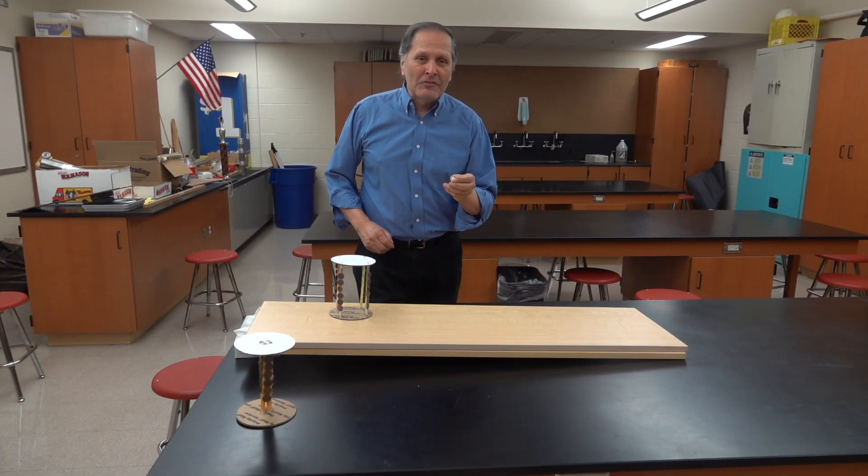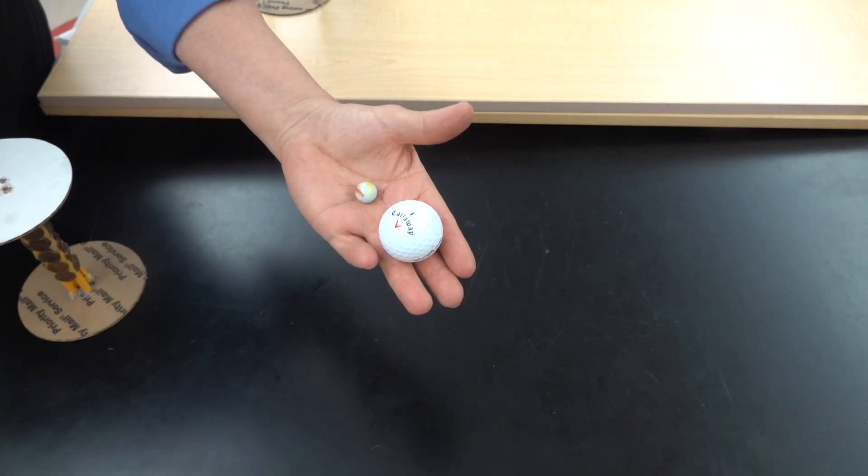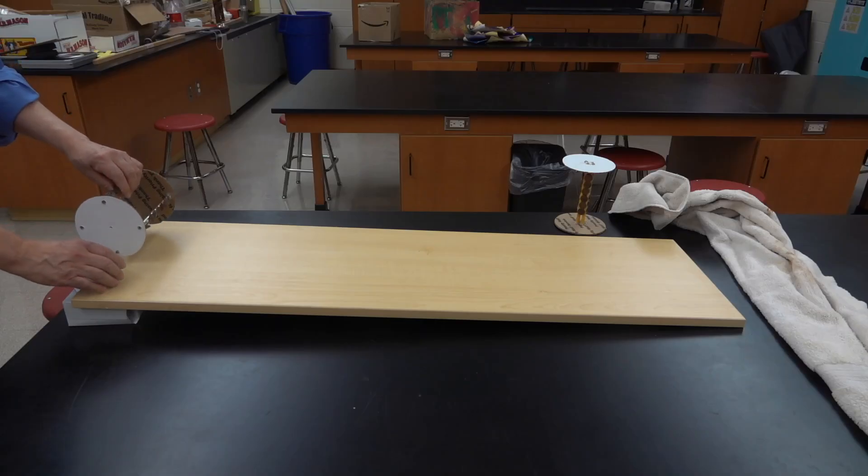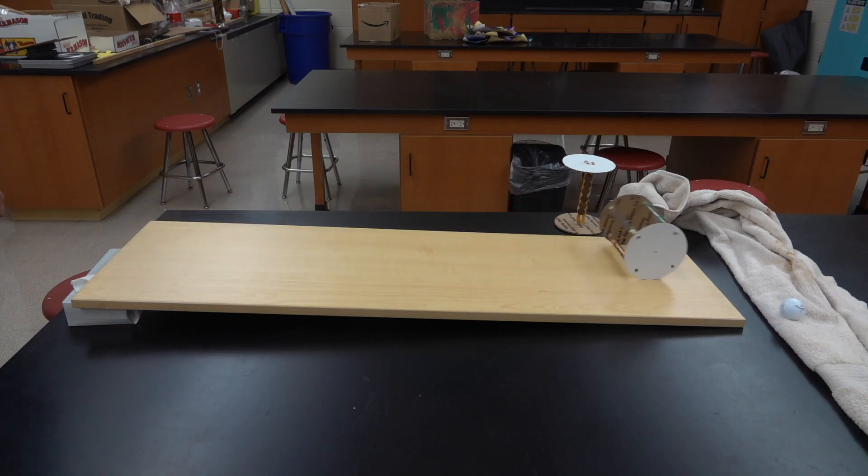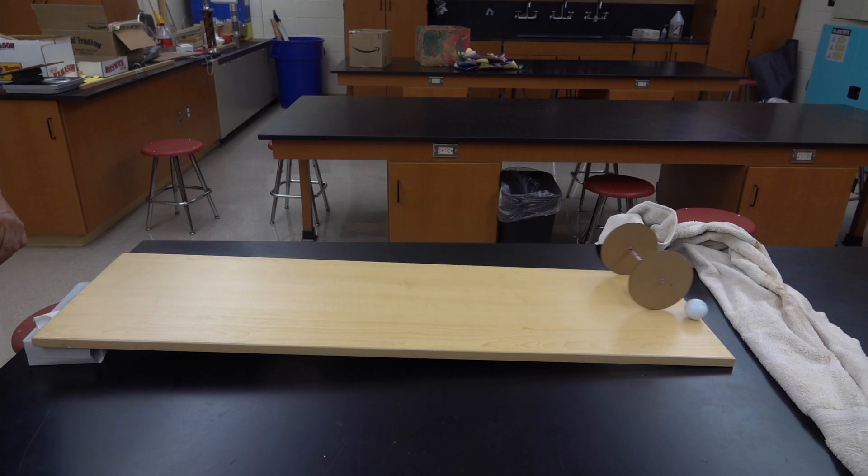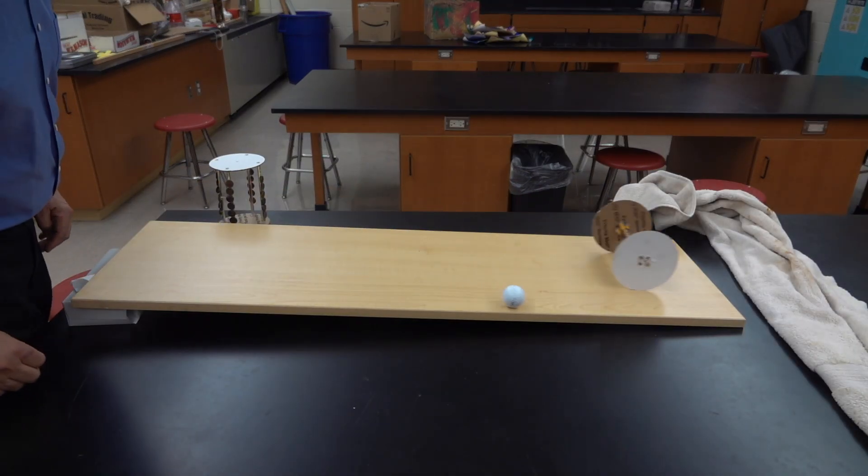Now, to aid students in the design process, they can do something that I like to call the marble test. You can race your object against a marble or a golf ball to see if you're making progress. We see that this piece accelerates slower than the golf ball. This piece is pretty much even with it. This one accelerates faster than the golf ball.